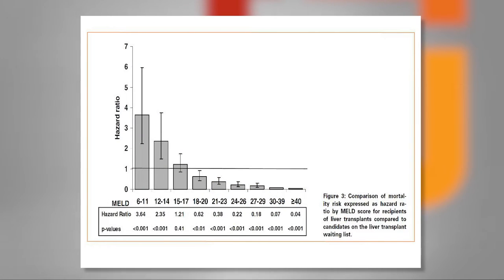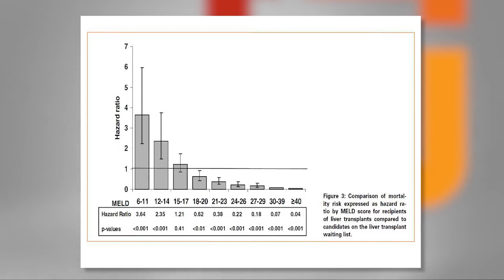The cut-off MELD score where you benefit more from liver transplantation, rather than staying with the liver that you have, is a MELD of 15. If your MELD is less than 15, we recommend following you, unless you are extremely symptomatic from your liver disease. If your MELD is higher than 15, the data is very clear that your survival will be longer with a liver transplant than without, as well as a much improved quality of life.